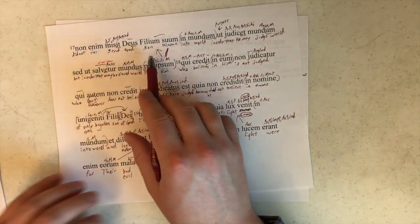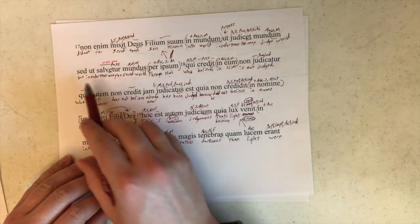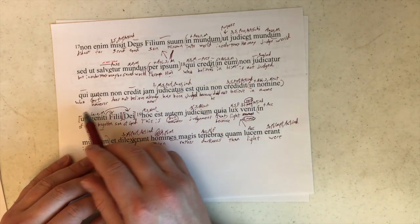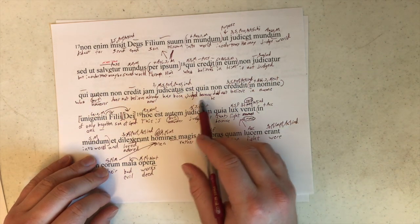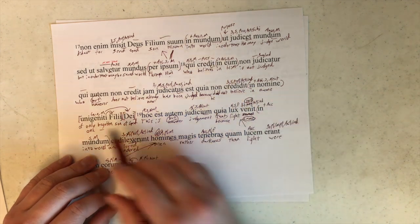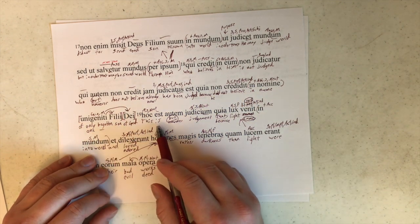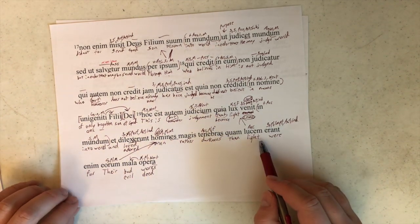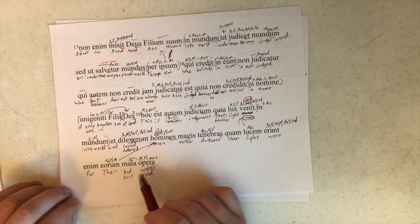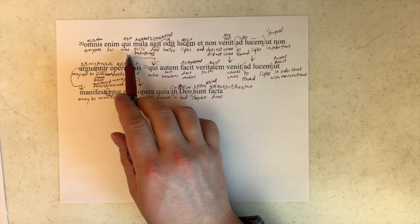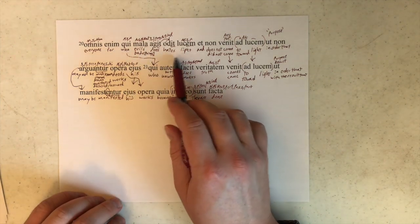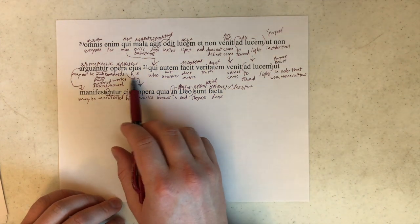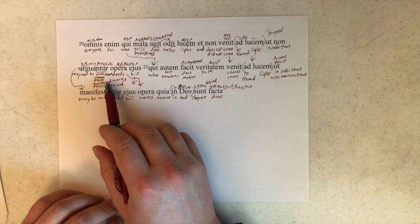God did not sin, for God did not send his own son into world in order that he may judge world, but in order that the world may be saved through him. Who believes in him is not judged, but who does not believe already has been judged, because he did not believe in name of one begotten son of God. But this is judgment, that light came into world, and men loved rather darkness than light, for their deeds' works were evil. For everyone who does evils hates light, and does not come, did not come to light, in order that his deeds may not be made known.